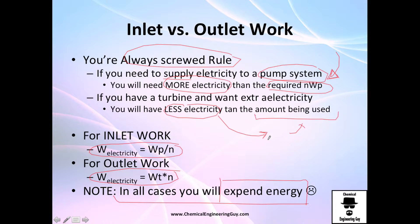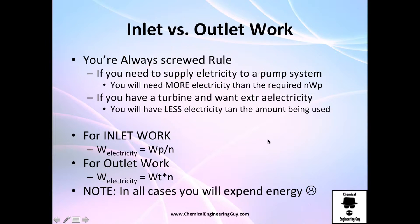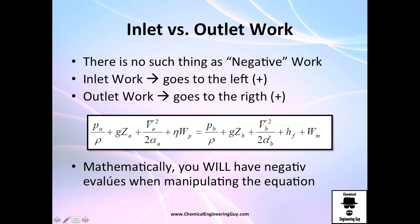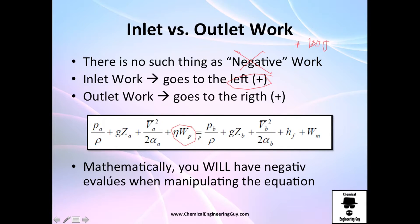Never use negative work values. If they tell you 100 joules is taken away, use positive 100 joules. If they tell you 100 joules is added, use positive 100 joules. Adding 100 joules puts you on the left side of the equation; taking out 100 joules puts you on the right side.